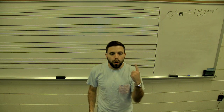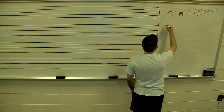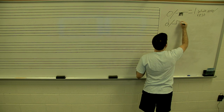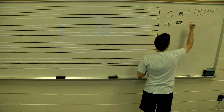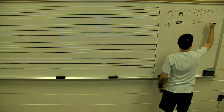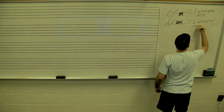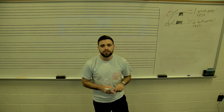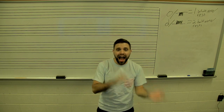Up here we have one whole note and one whole rest. In that whole note, there are two half notes or two half rests. Half rests and whole rests look very similar. The way I was taught: a half rest looks like a hat — half and hat both start with H.